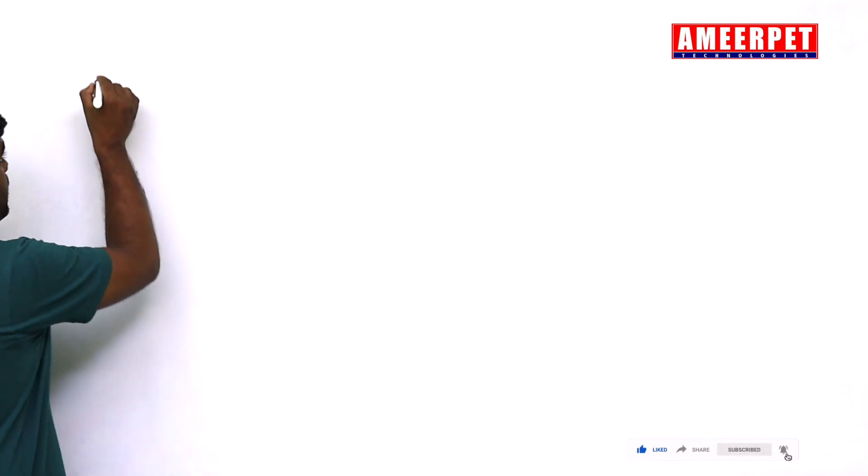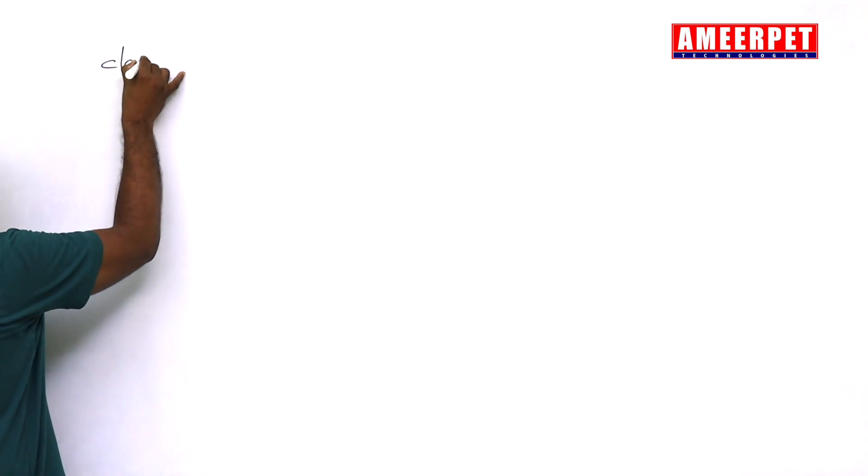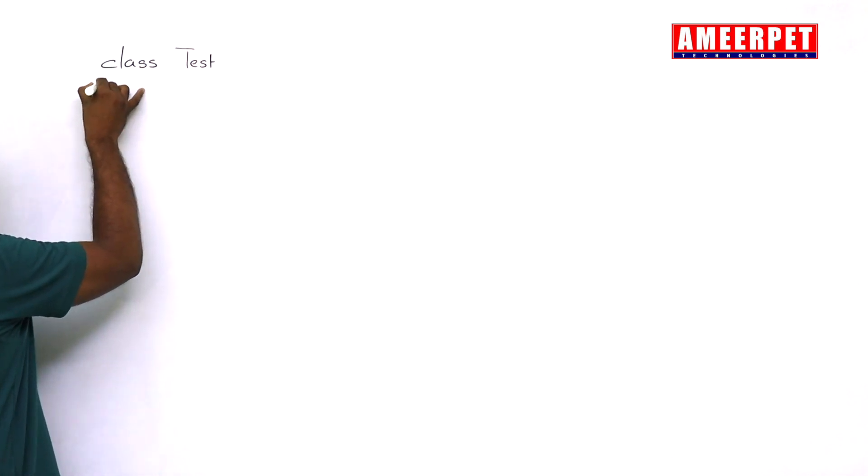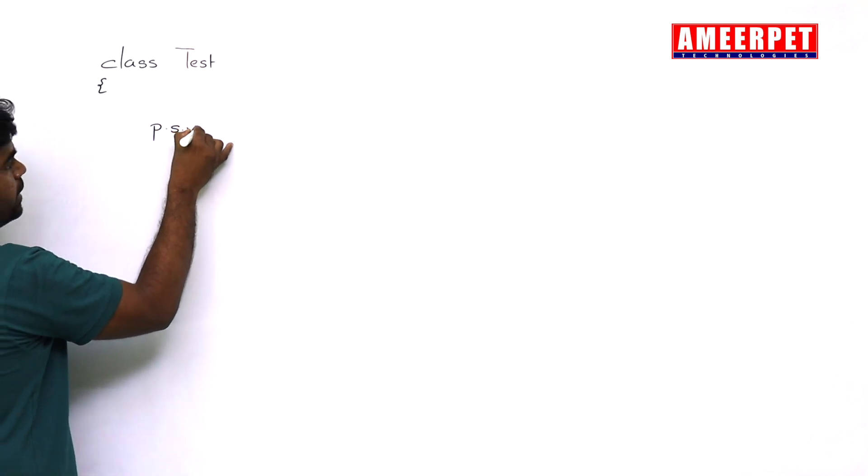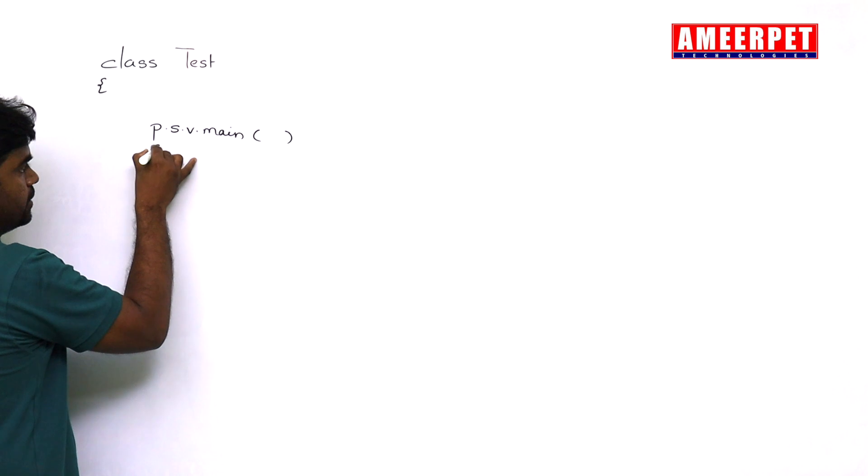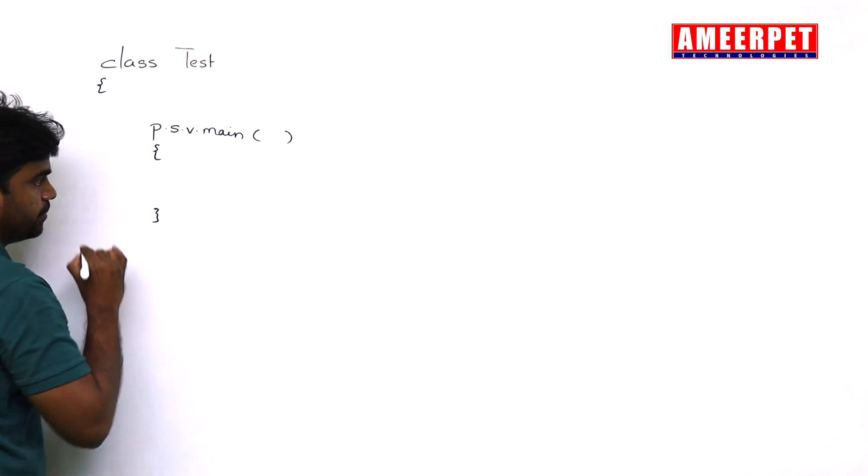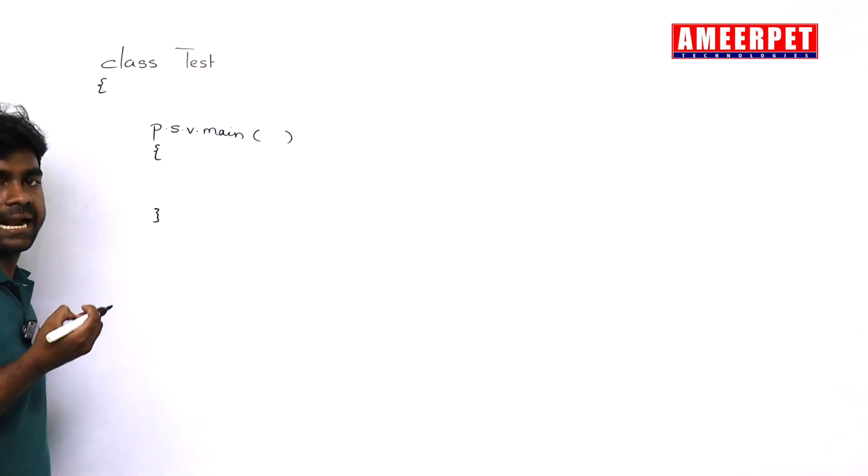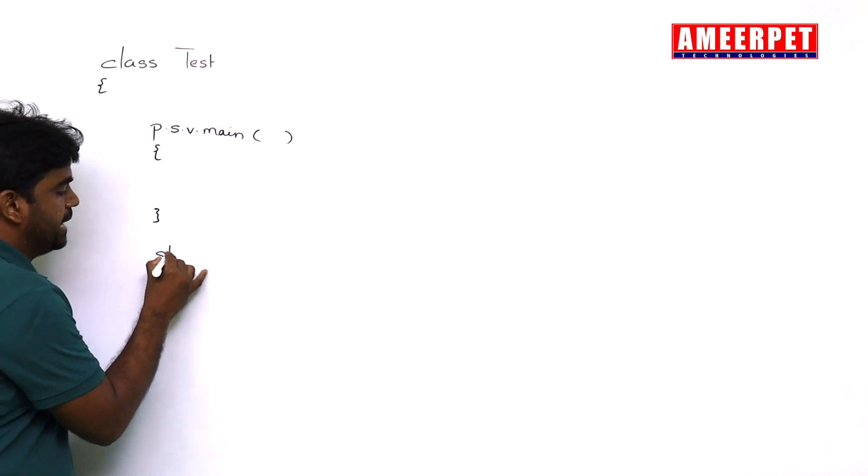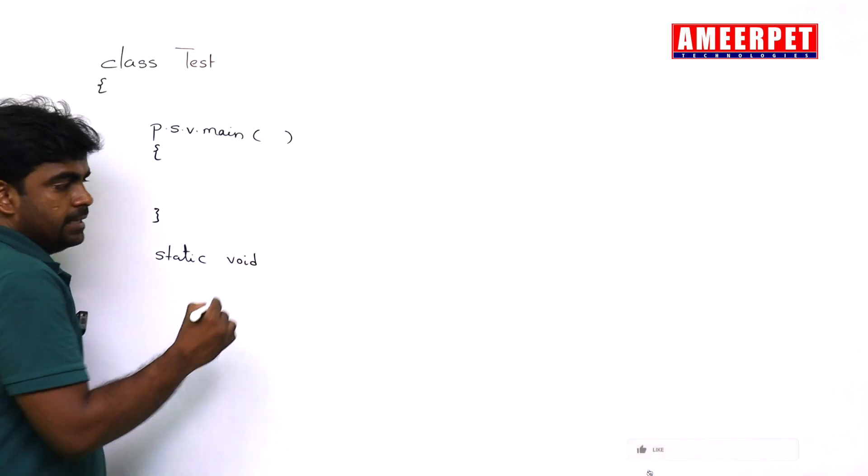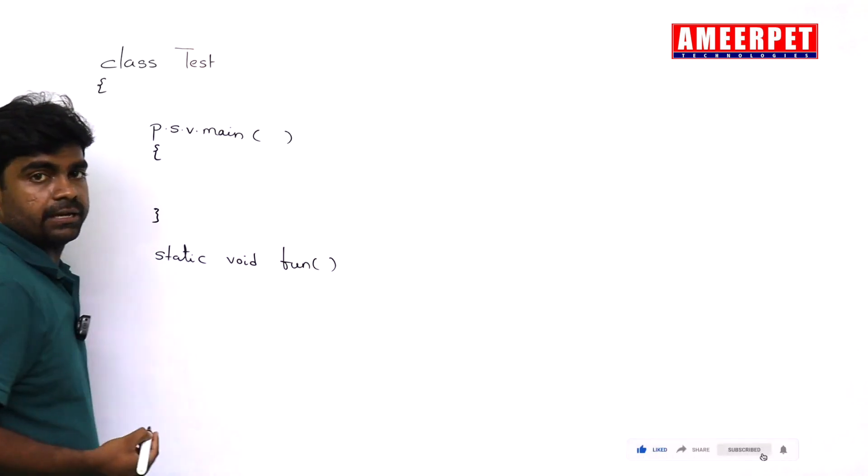Suppose I am taking one simple example. In a class, in a class test, program execution starts from the main method that we know already, public static void main is a method. I am defining another method. Simply, static method, I am taking static void, just fun.